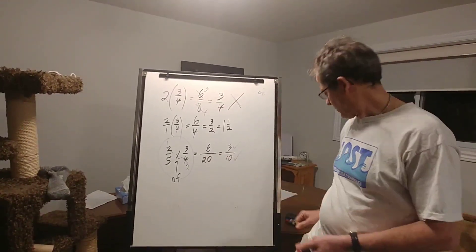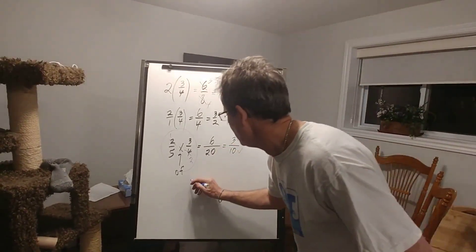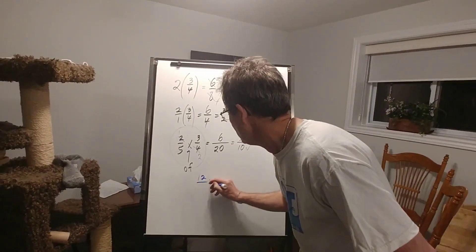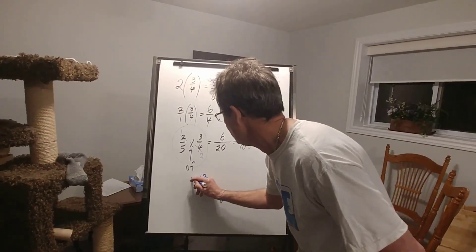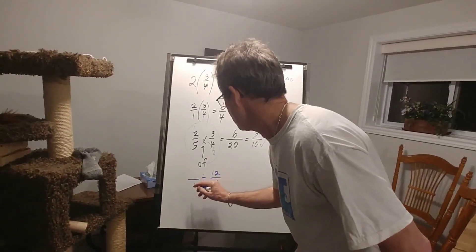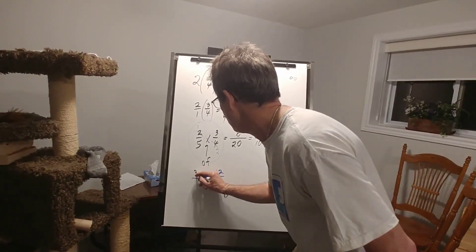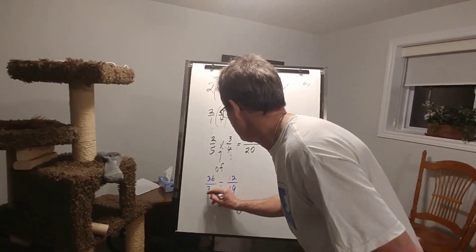Okay, let's look at one more example here. Let's say I'm dividing. So let's say I have 12 over 19 divided into 36 over 38.